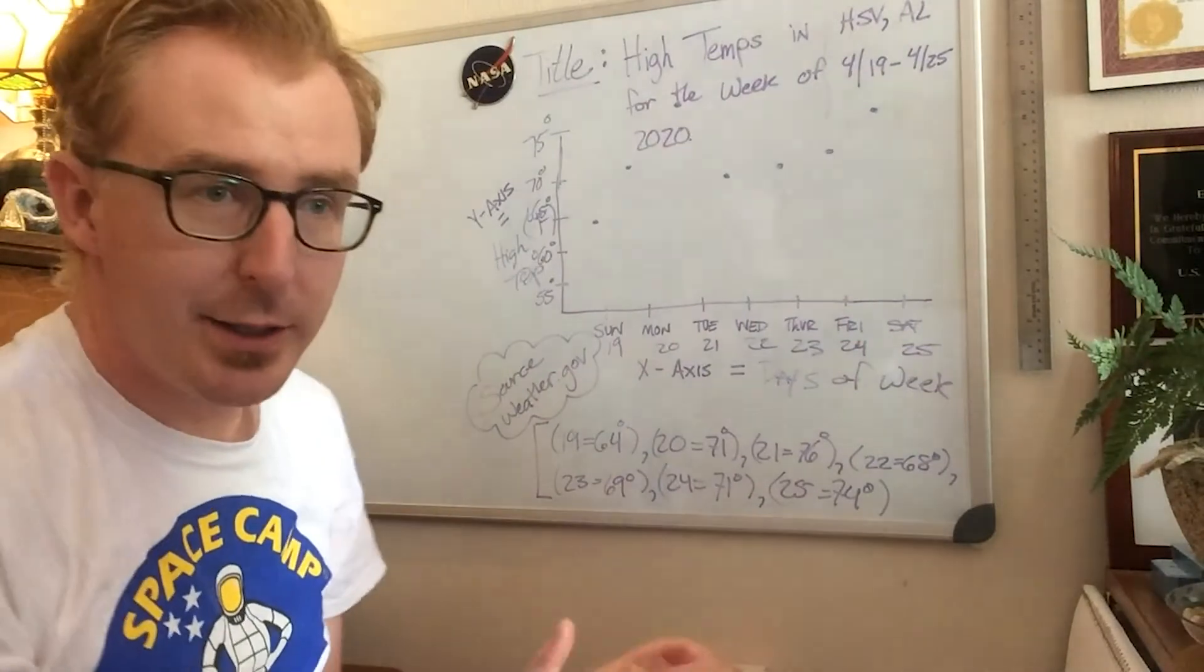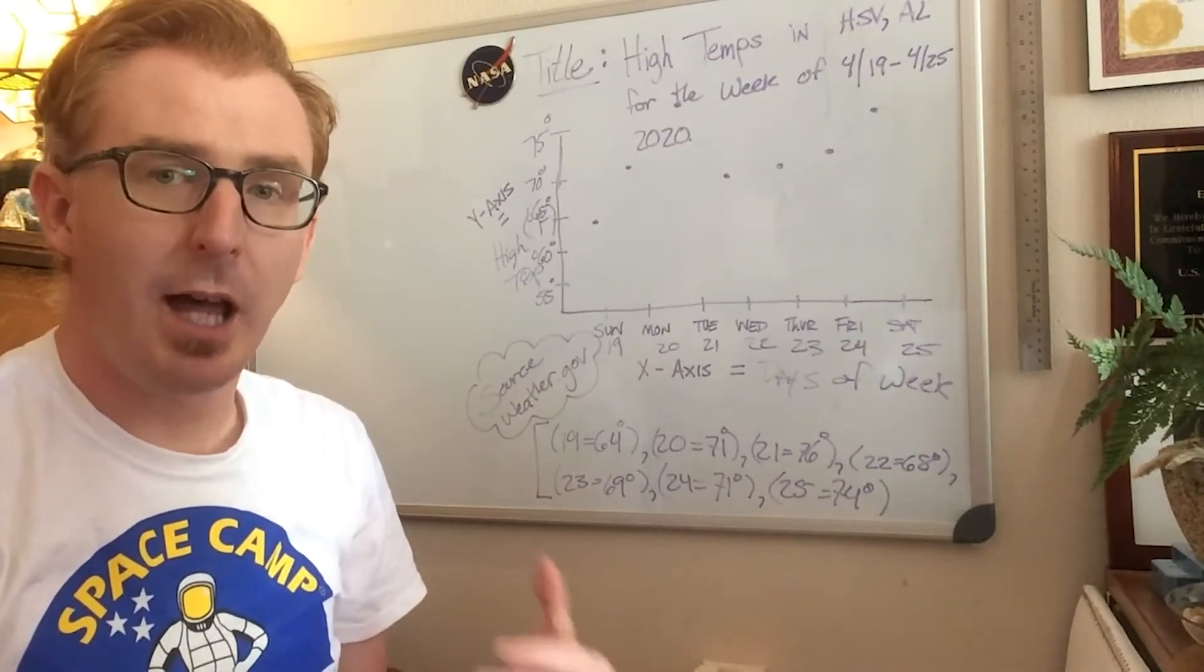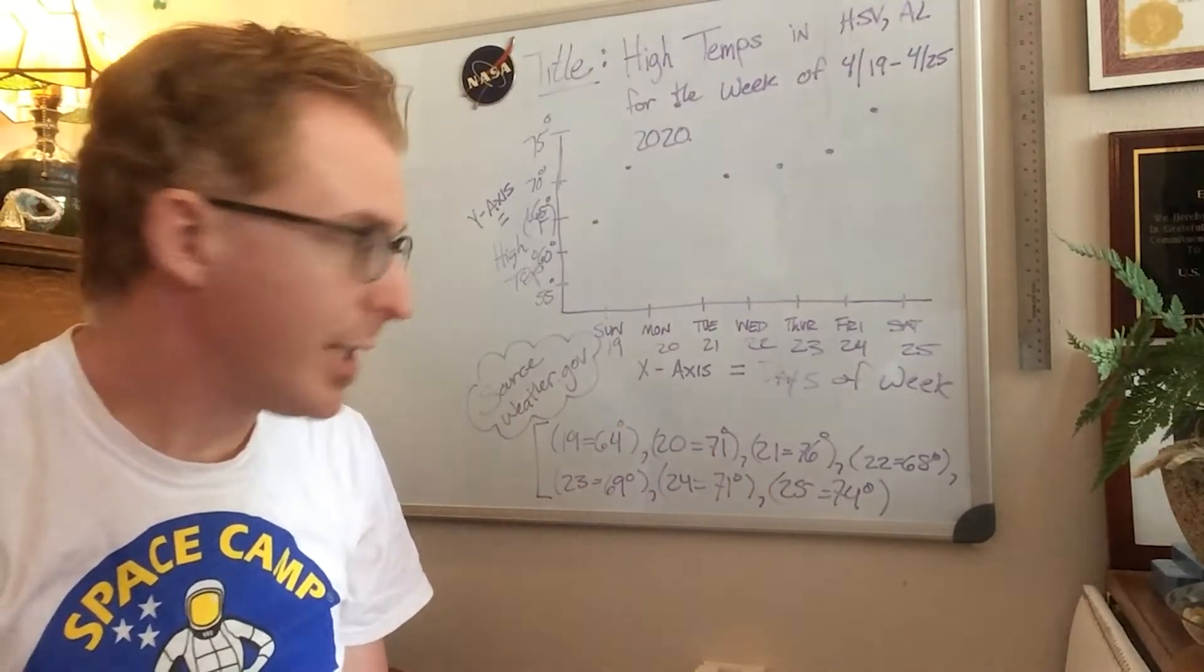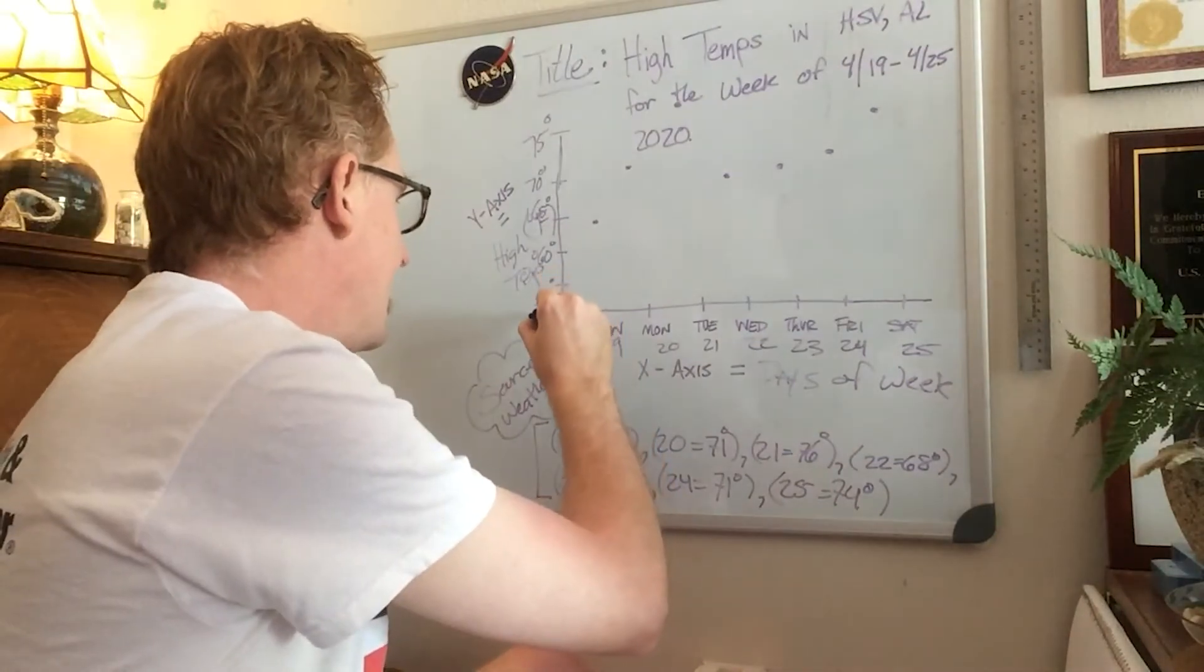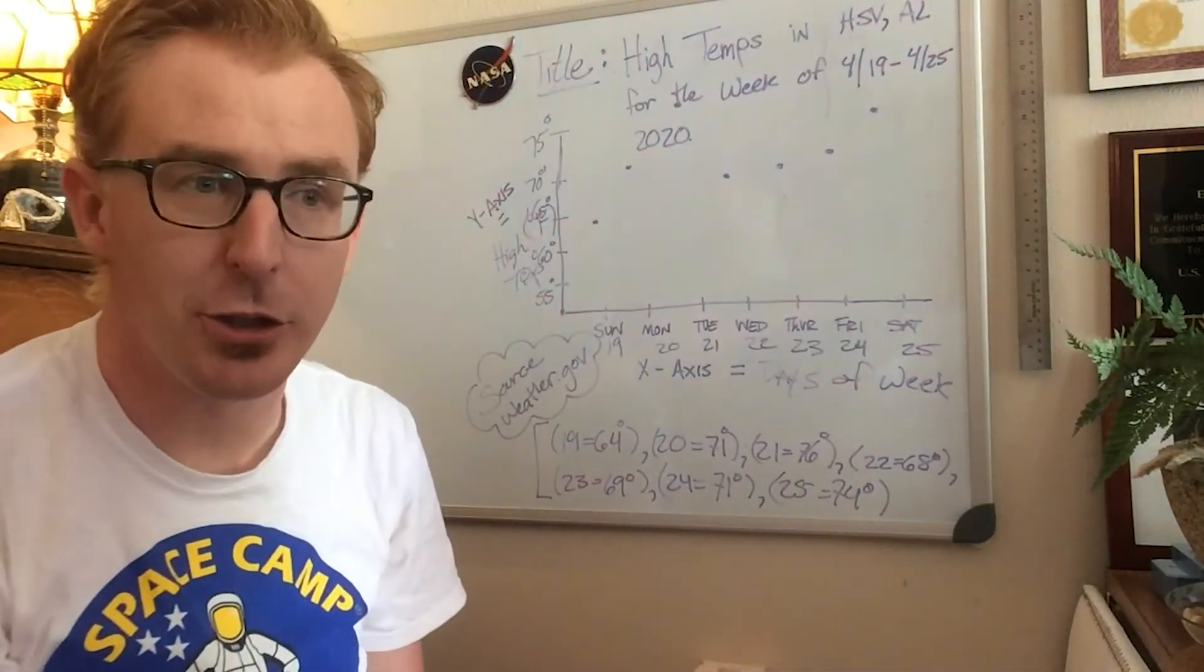Now we have plotted these points on our graph, but for it to be a line graph we have to show some connection over time. So people do that using lines to connect.